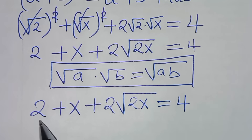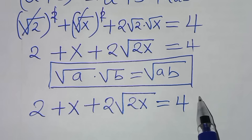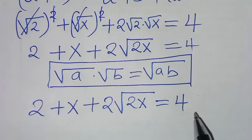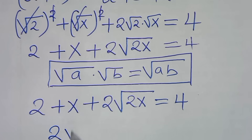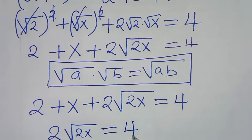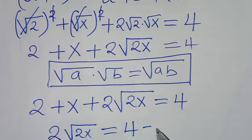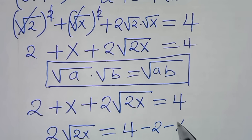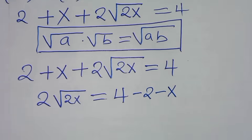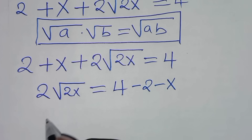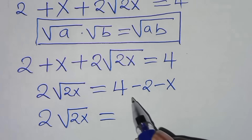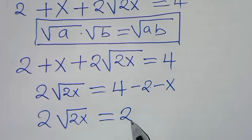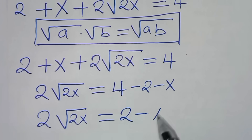From here, let's take 2 plus x to the right-hand side, so that we have 2 square root of 2x equals 4 minus 2 minus x, which is 2 minus x.